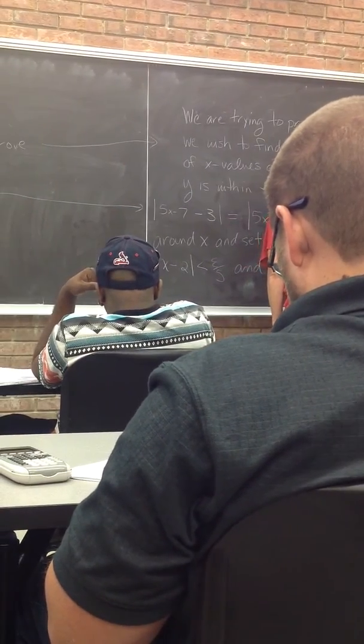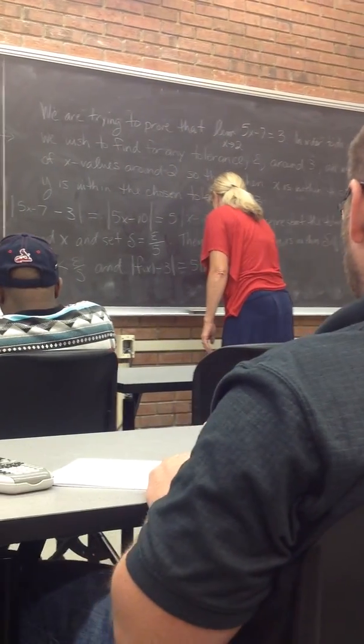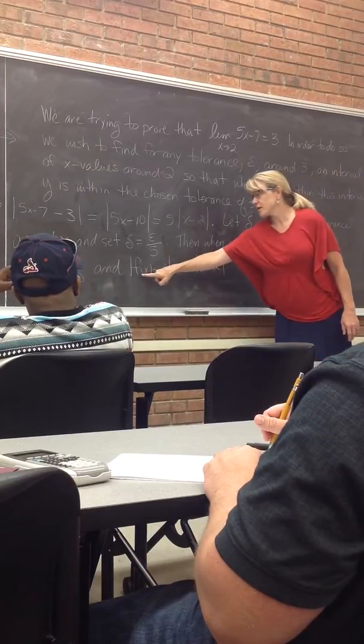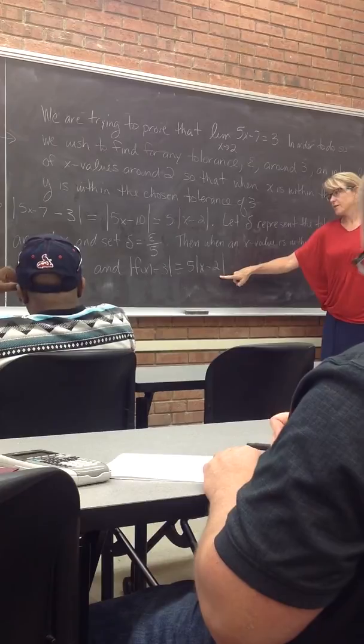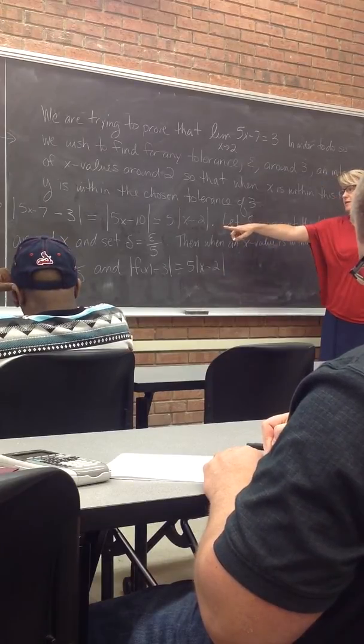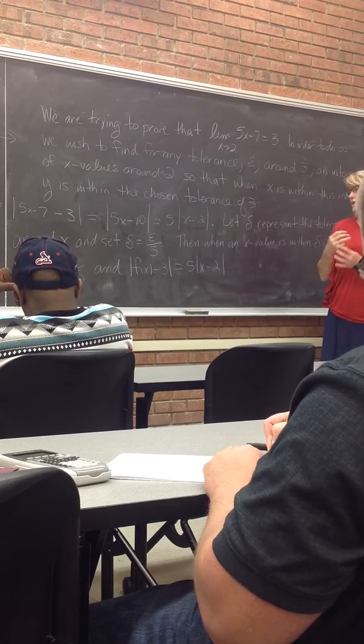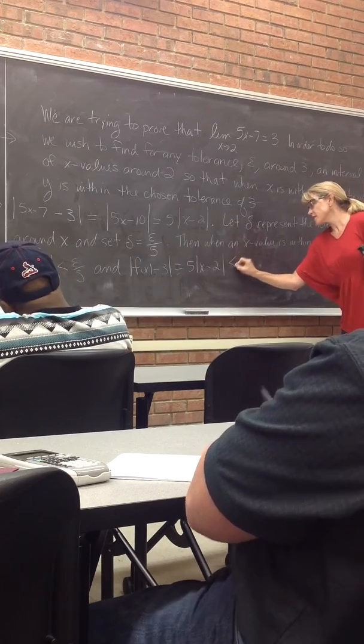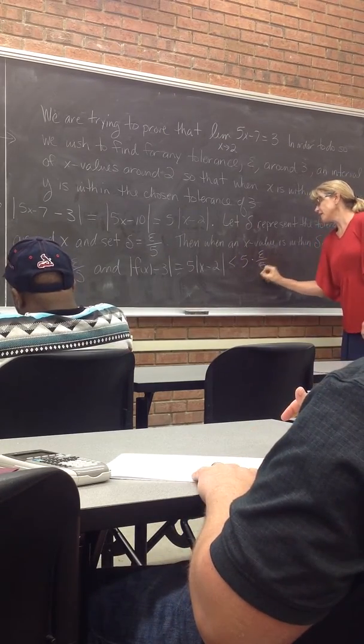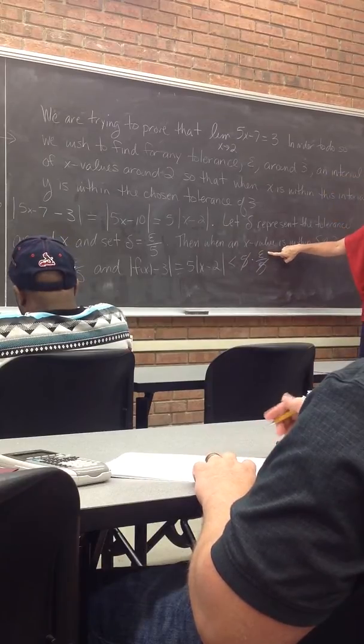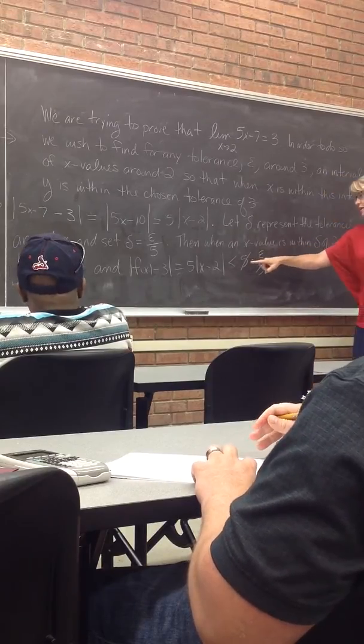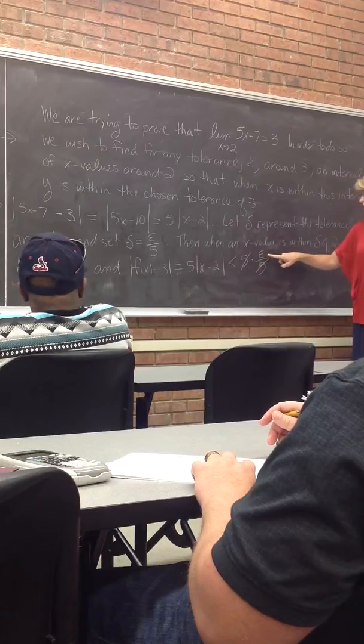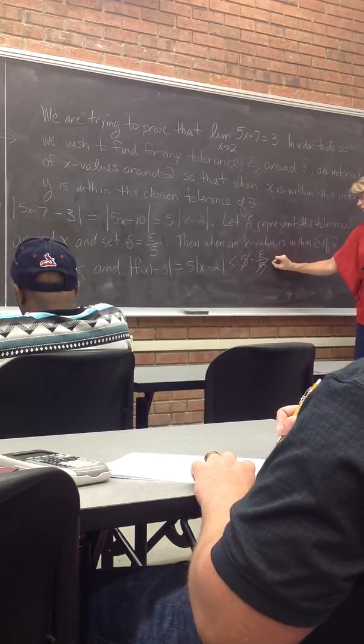And f of x minus 3, which we said is equal to... we already said my function minus 3 is equivalent to this. So if I make sure that I pick x's that are within epsilon over 5 of 2, then this is going to be less than 5 times my delta. But I set delta equal to whatever epsilon I pick divided by 5, and my function's distance from 3 will be less than whatever tolerance I chose.